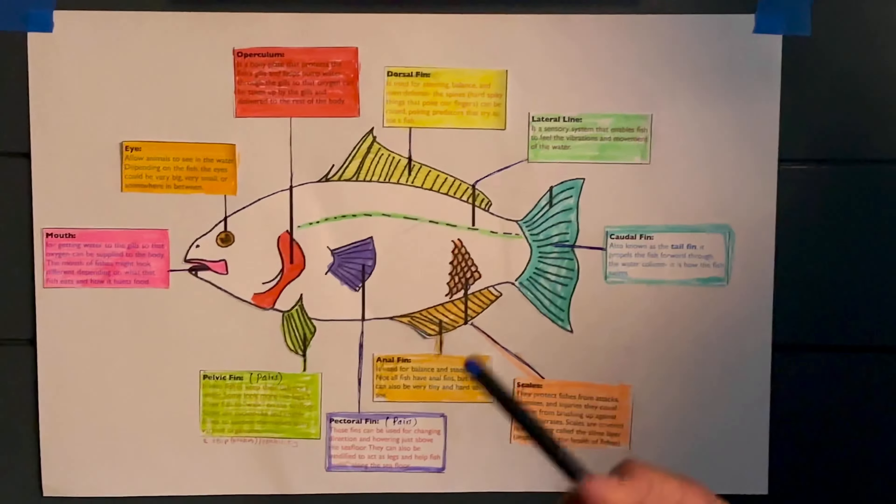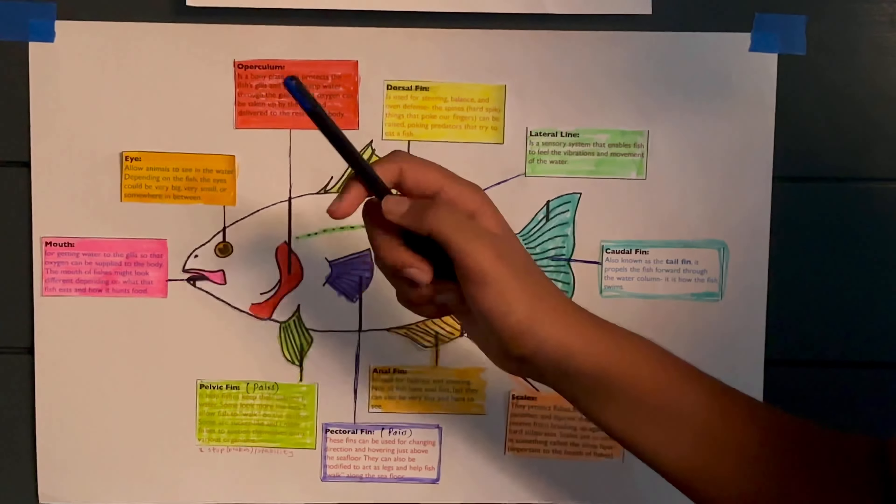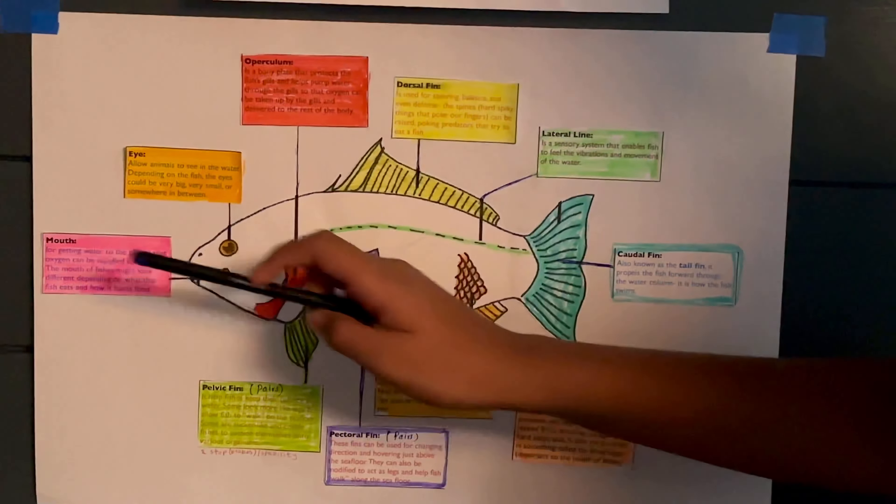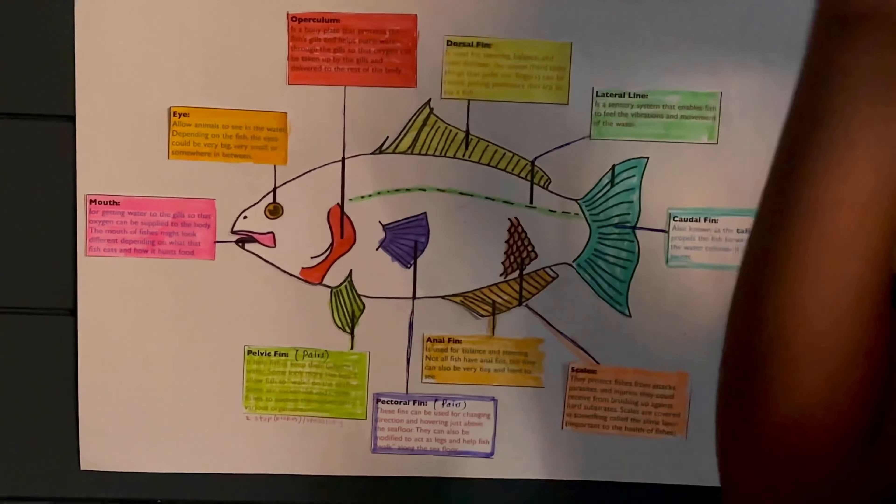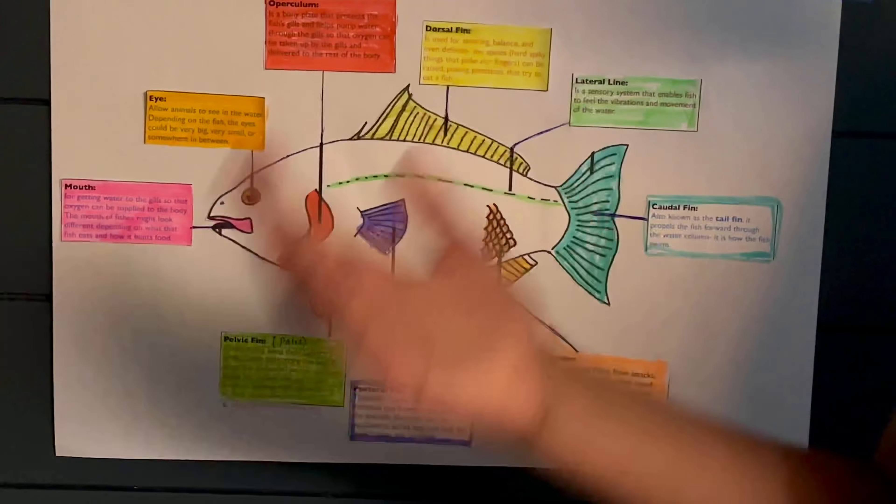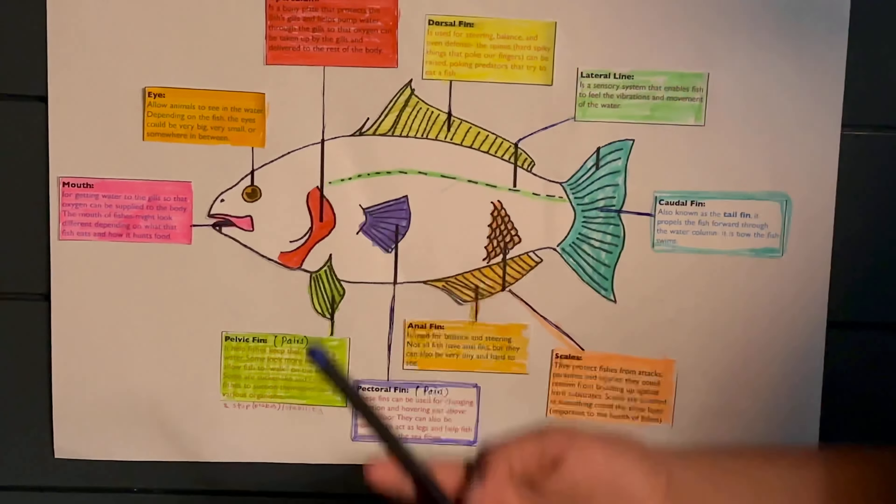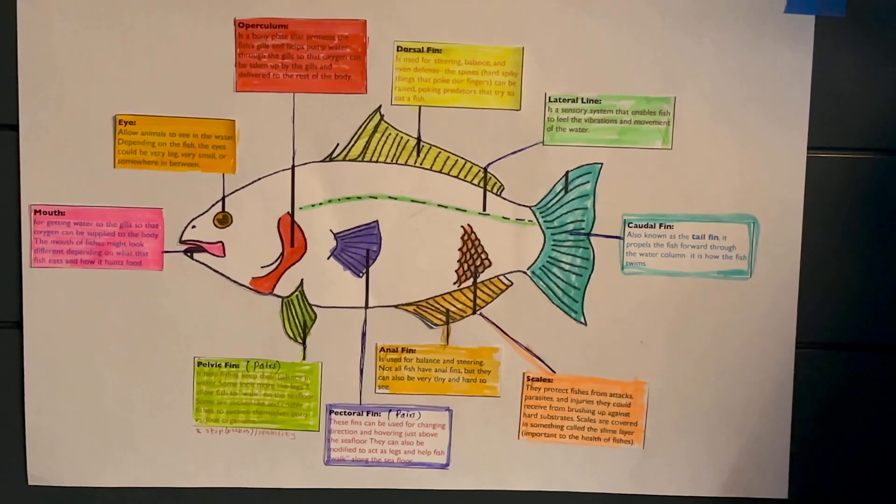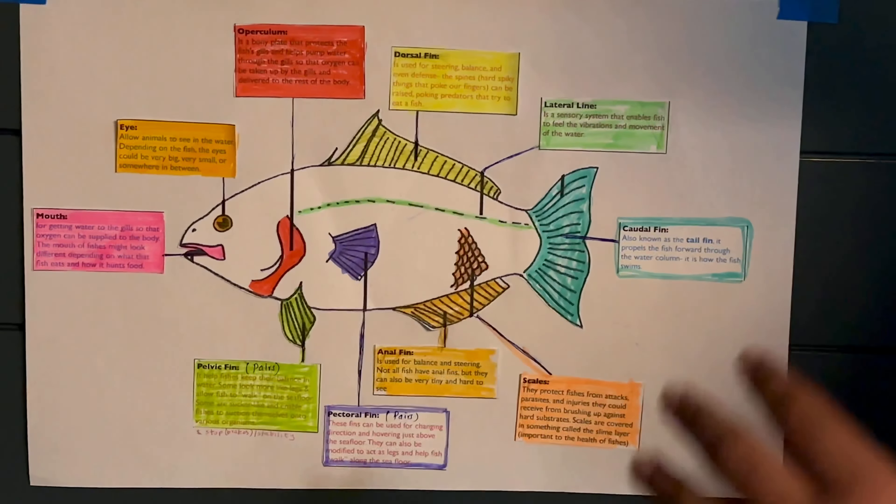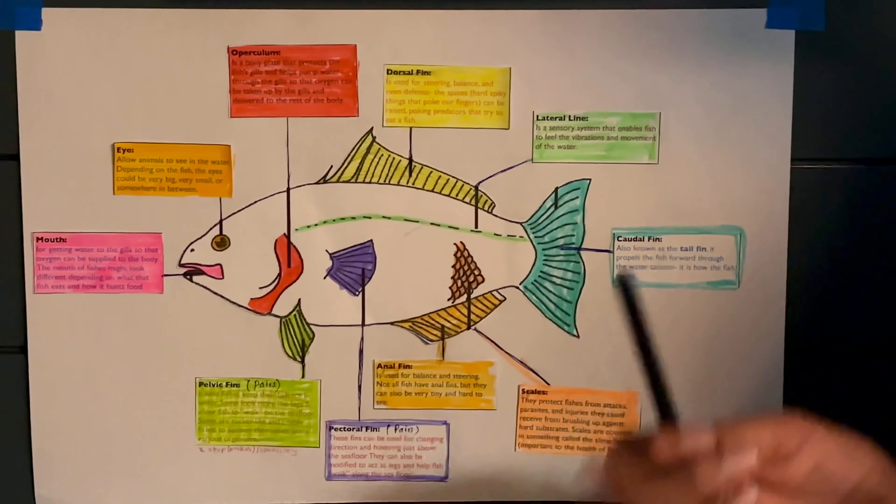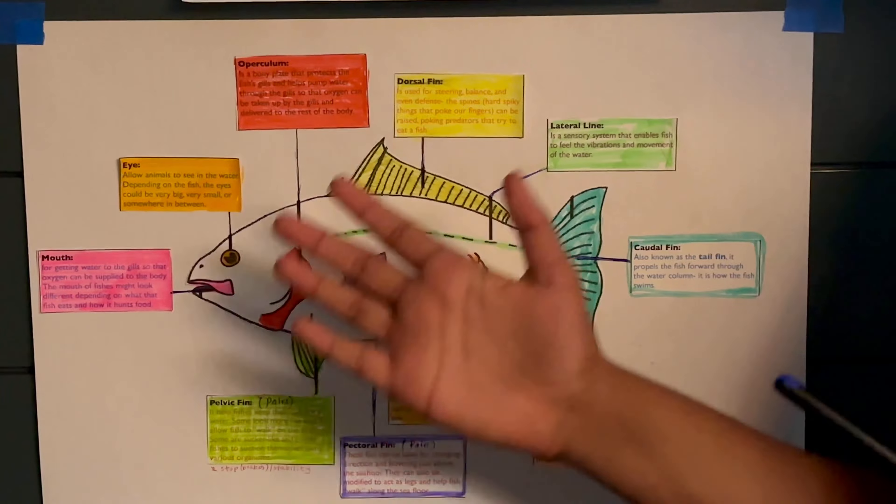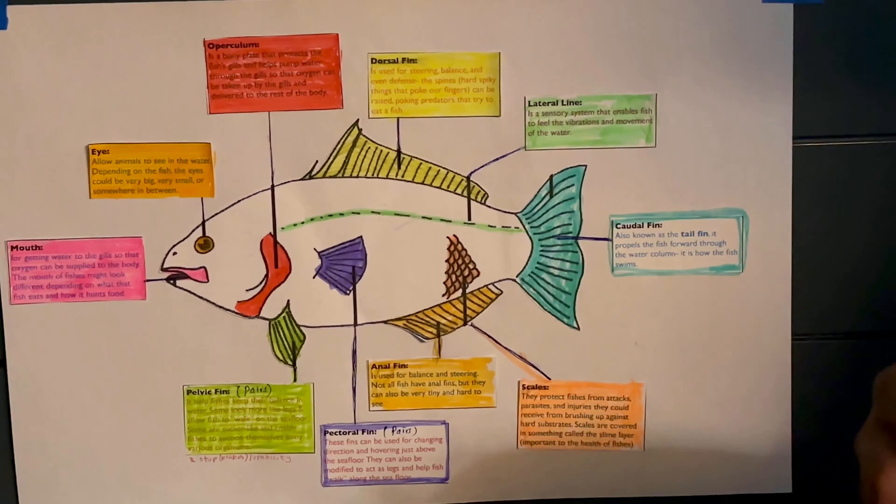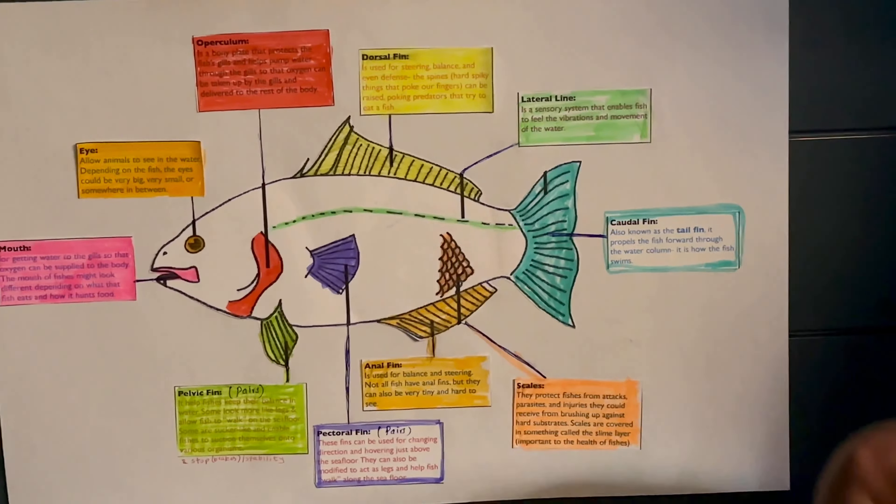Now we're going to be talking about three last things: the operculum, the eye and the mouth. The eye is there so that the fish can see and understand its surroundings. The fish, no matter the eye size, still has the same purpose which is to allow the fish to analyze the surroundings and determine whether it's in danger or not. It could also use its eyes to determine whether there's a predator behind it or if it's going to be in danger by going in a certain area.